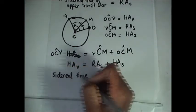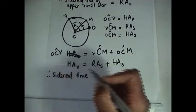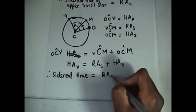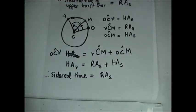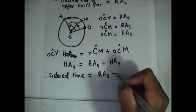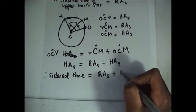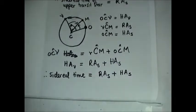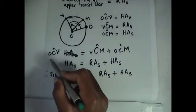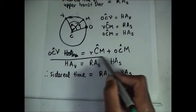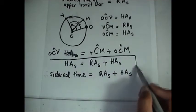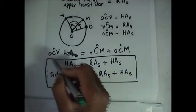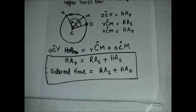Therefore, sidereal time is equal to right ascension of a star plus the hour angle of that particular star. This part is going to be very important as we see in the example.